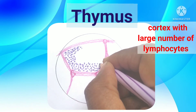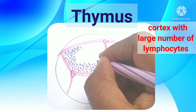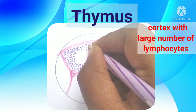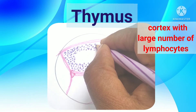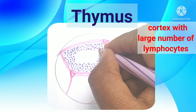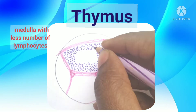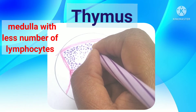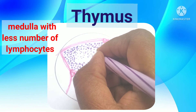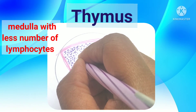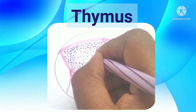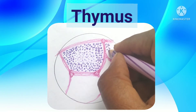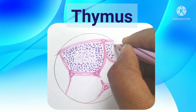Epithelioreticular cells also have an epithelial nature, meaning they have cell junctions. There are six types of epithelioreticular cells - three types present in the cortex and three types in the medulla. Type 1 epithelioreticular cells are just beneath the capsule and trabeculae; they are connected by tight junctions, which forms the blood-thymic barrier. Type 2 epithelioreticular cells support the lymphocytes.